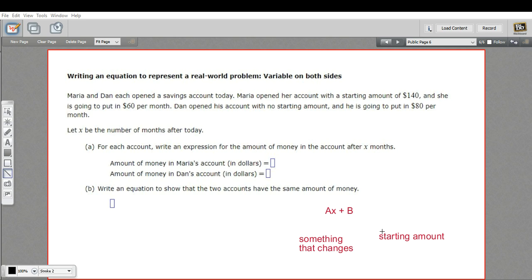In this form, the B is a number that represents the starting amount, some constant, something that doesn't change. For example, Maria starts with $140, so that's what B is going to represent.